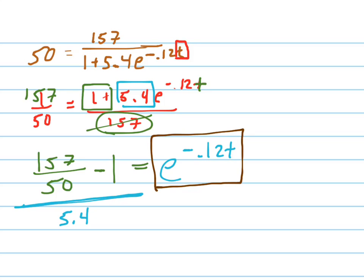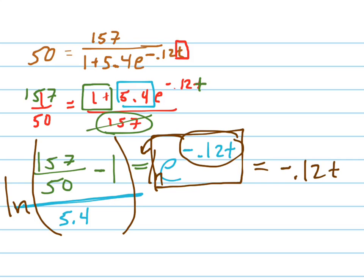So when I take the natural log of that big mass right there, and I take the natural log of that, I get this thing coming down to the front, and the ln and the e cancel each other out. So now I'm almost done. I just have to get rid of the negative 0.12. And so I take the entire left side and divide it by negative 0.12. So there's your answer right there.